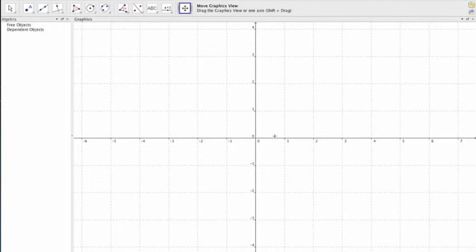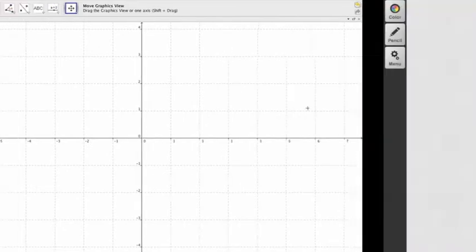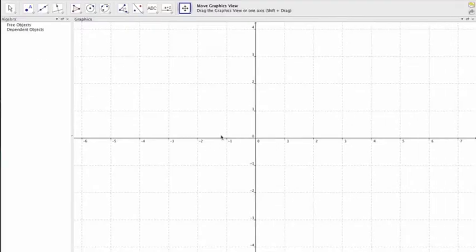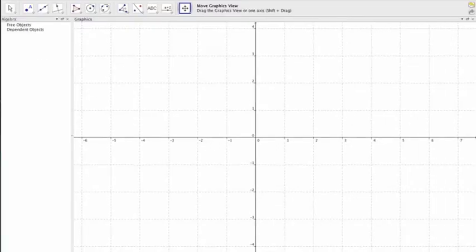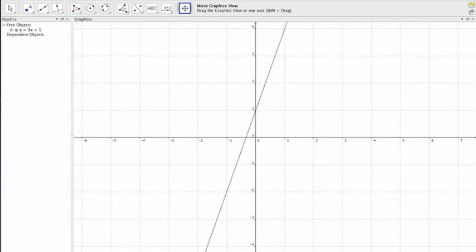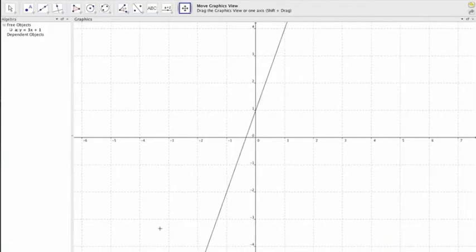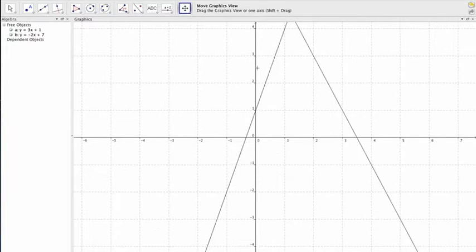All right, so the next thing is we've got to tell it what to graph. So the first equation is y equals 3x minus 1. So we're going to type that in down here at the bottom. My video cut it off, but there should be a place to type at the bottom of the screen. Just type in y equals just like it says. Then hit enter. We do the same thing for the other equation. y equals negative 2x plus 7.